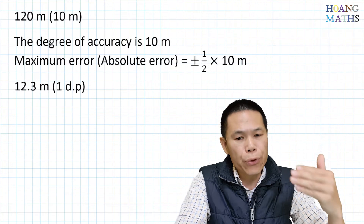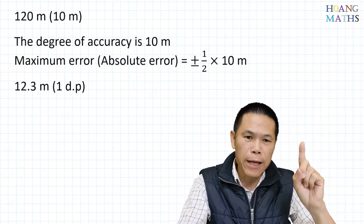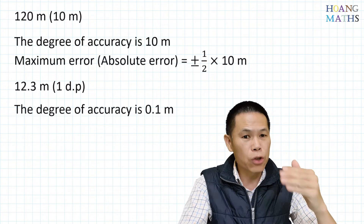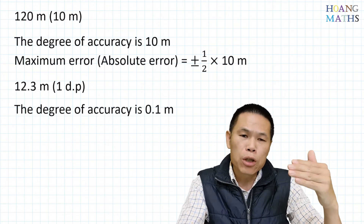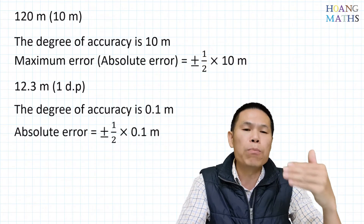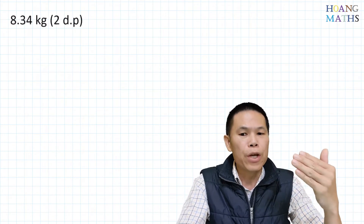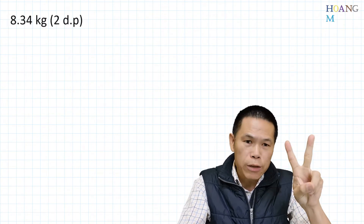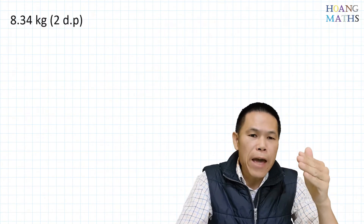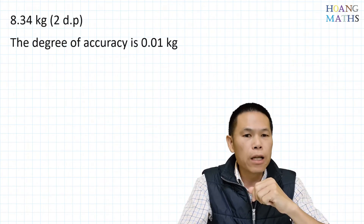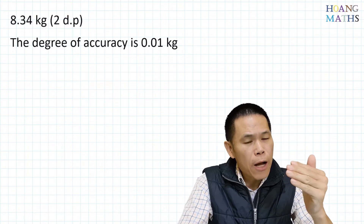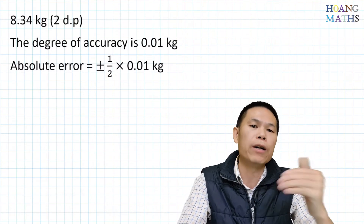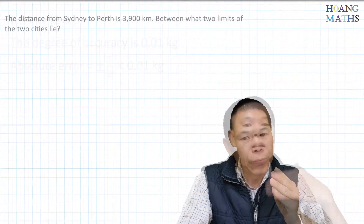Next example: we have 12.3 meters, which is correct to one decimal place, so the degree of accuracy is 0.1 of a meter. The absolute error is half of 0.1 meters. Last example: 8.34 kilograms is correct to two decimal places, so the degree of accuracy is 0.01 kilograms, and the absolute error is half of 0.01 of a kilogram.